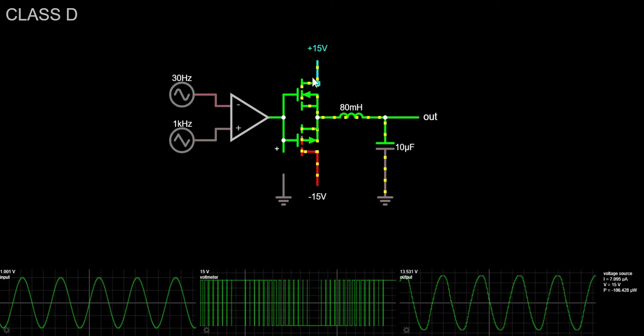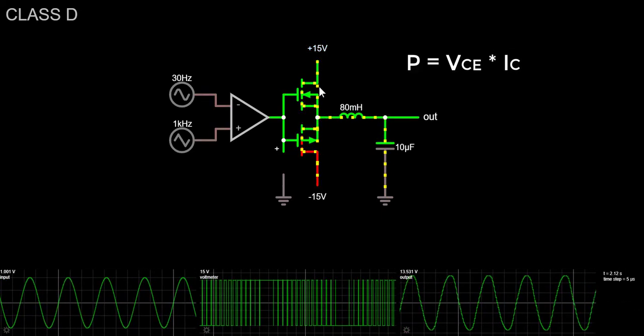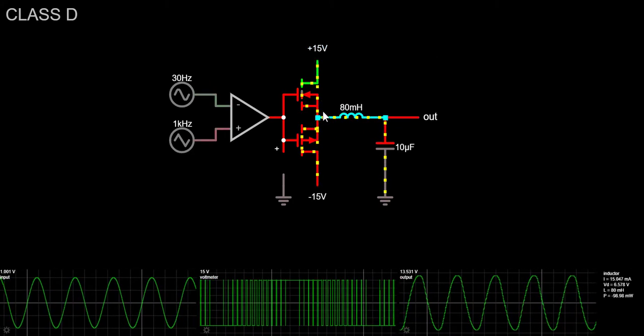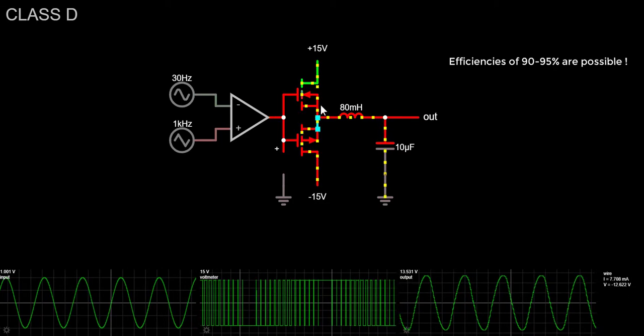The power dissipated in the switching transistors, which is the product between the collector-emitter voltage and the collector current, is always small. Efficiencies of 90-95% are possible.